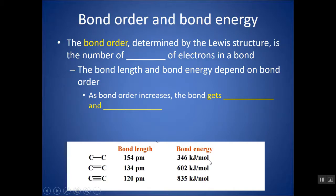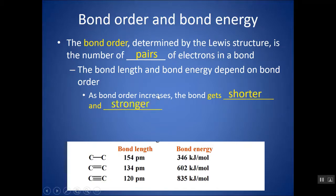If you remember from chapters 8 and 9, certain factors affect how much energy is needed to break a bond. One of them is bond order — basically how many pairs of electrons are in the bond. As bond order increases, going from single to double to triple bond, the bond gets shorter and stronger. Anytime you have a shorter bond, it's going to be stronger.